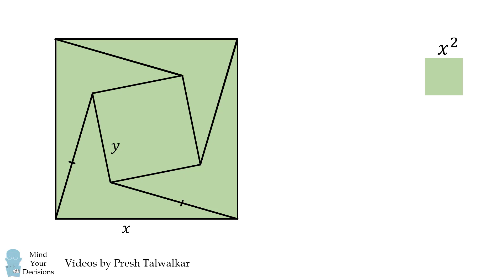Therefore, its area will be equal to X squared. There is another way that we can compute the area of this large shape. It will be equal to 4 times the area of the quadrilateral plus the area of this quadrilateral on the inside.